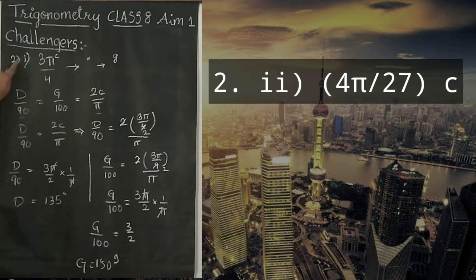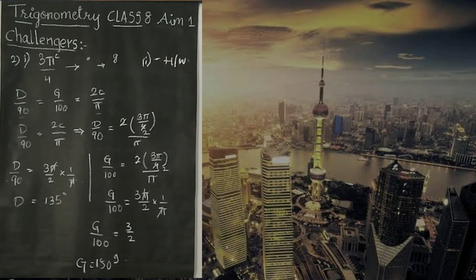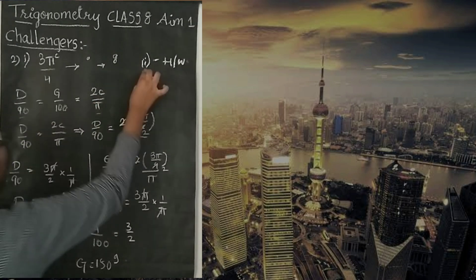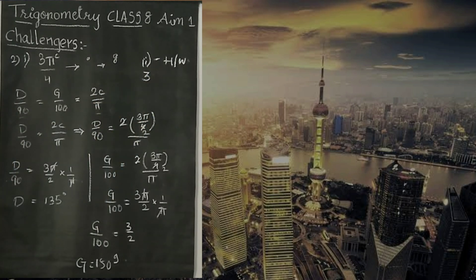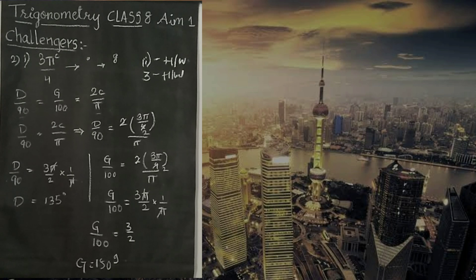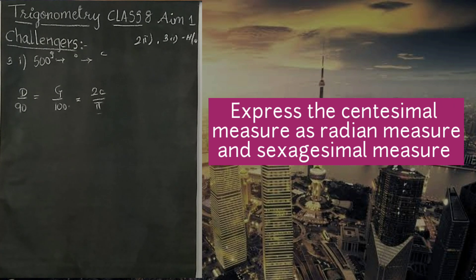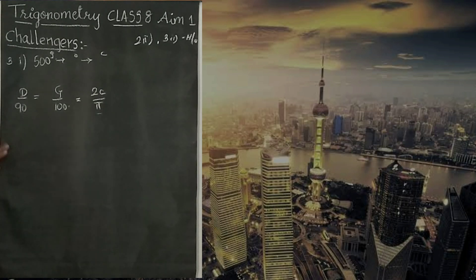With this, we completed second problem first one. Second problem second one is homework because it is very easy in the same format you will do it. Third problem is very easy, only 2 questions. That also, we will take it as homework. Now, we will use the 4th question. Instead of giving 2, I thought I will do 1. One more is homework. Third problem first question is 500 grades is given. We have to convert it to degree and circular decimal system. Let's start.